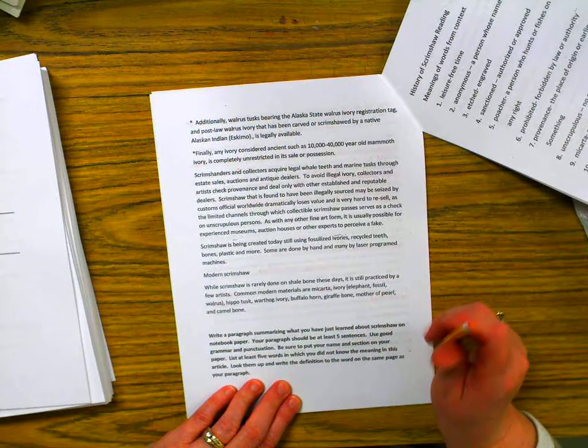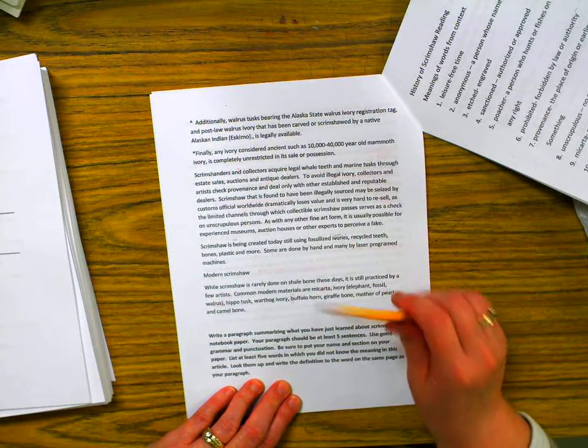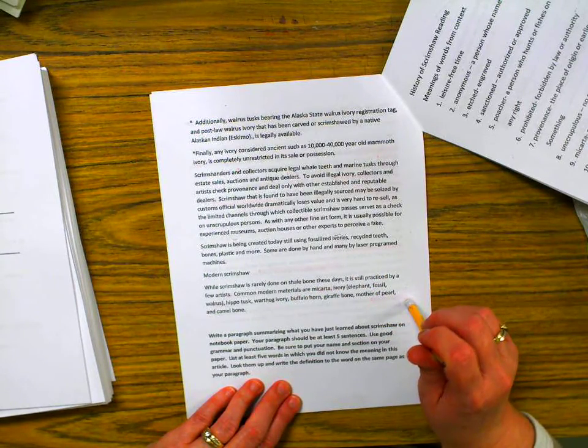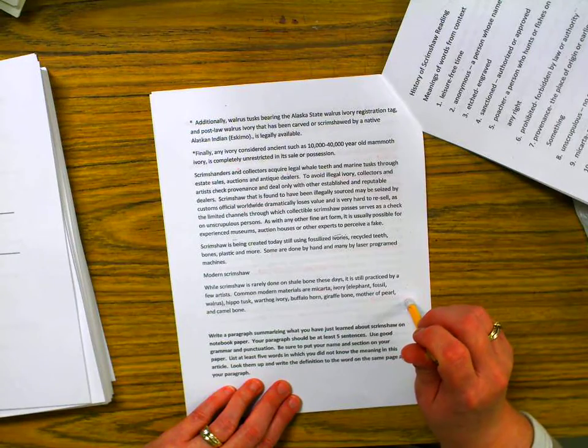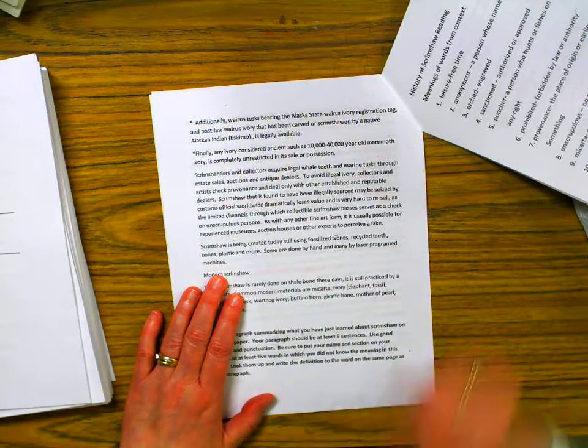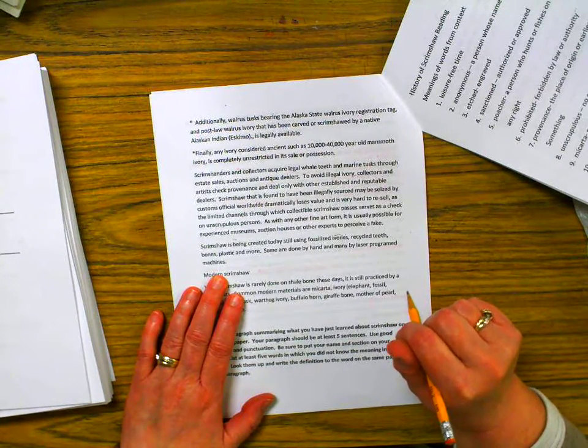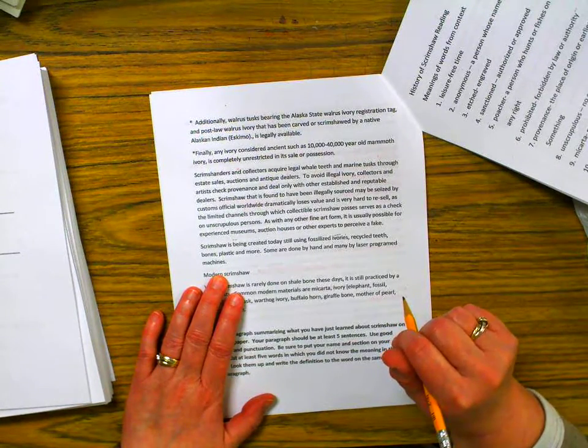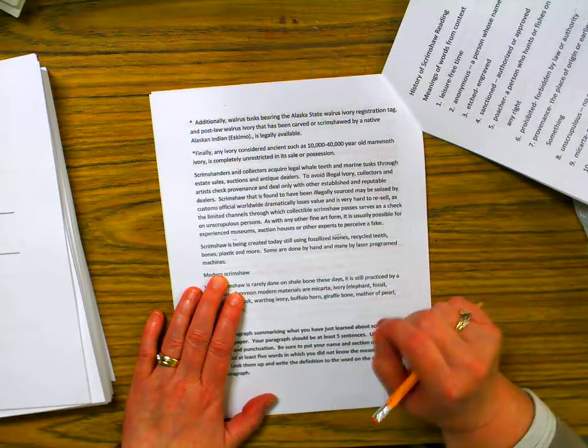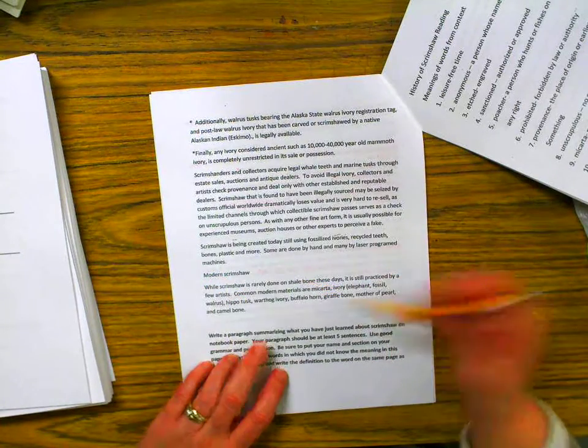Scrimshaw is being created today, still using fossilized ivories, recycled teeth, bones, plastic, and more. Some are done by hand, and many are done by laser-programmed machines. And I read somewhere, when I was reading about this, a lot of modern scrimshanders use dental tools to do their carving. Because they're very fine. It's good for teeth, but that's some teeth vibrate. It's the same. Yep. So, modern scrimshaw.